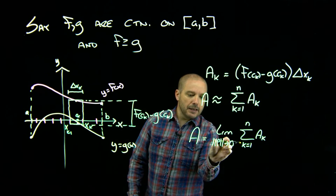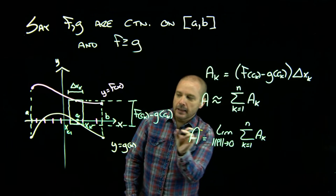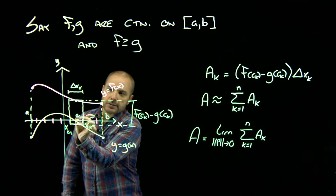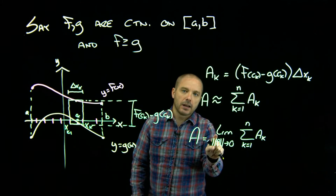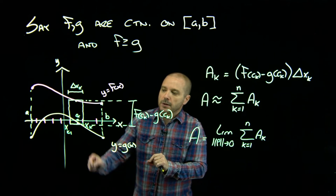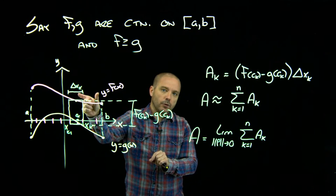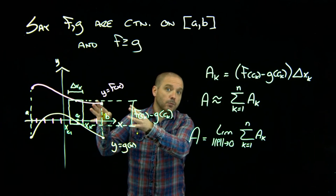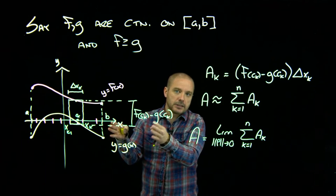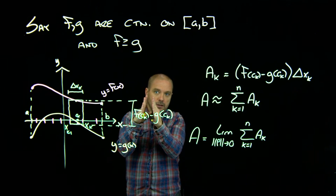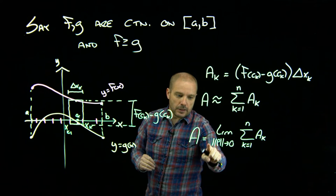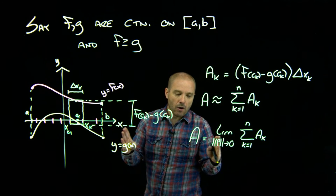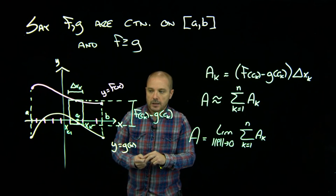Now, this limit is saying let all of your rectangles get skinnier and skinnier. Remember, we can't just say let n go to infinity because we allow each rectangle to have a different width. And just making more rectangles does not guarantee that they all shrink down in their width. This statement is just a fancy way of saying make all of those widths head down to zero.